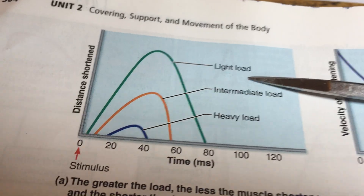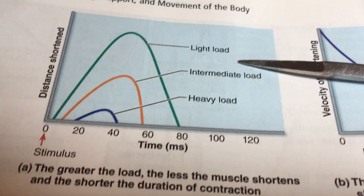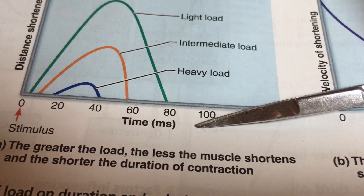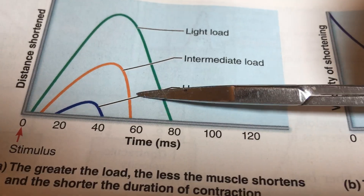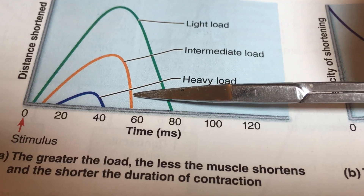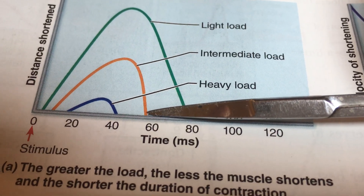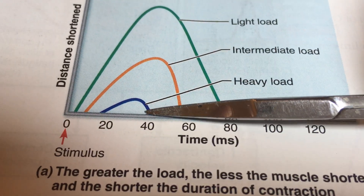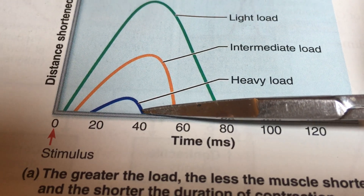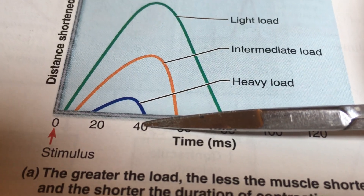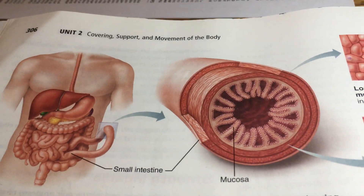The recruitment order summary shows that slow oxidative fibers handle light loads for long durations, fast oxidative fibers manage intermediate loads, and fast glycolytic fibers handle the heaviest loads but fatigue very quickly and cannot sustain effort for long.